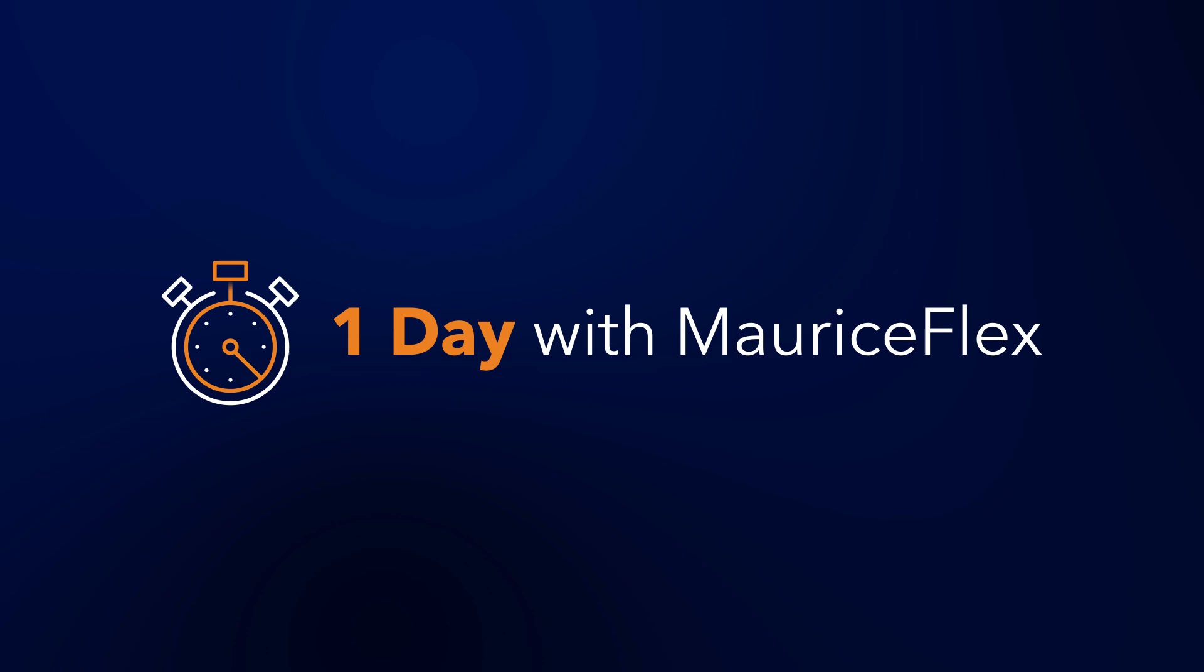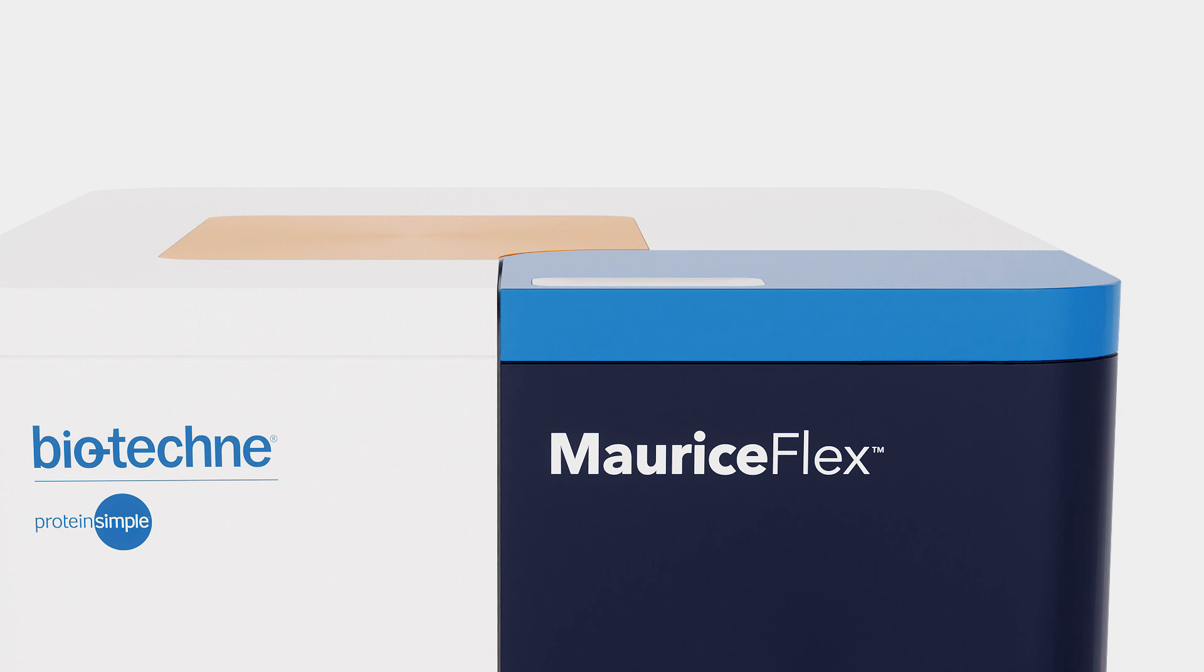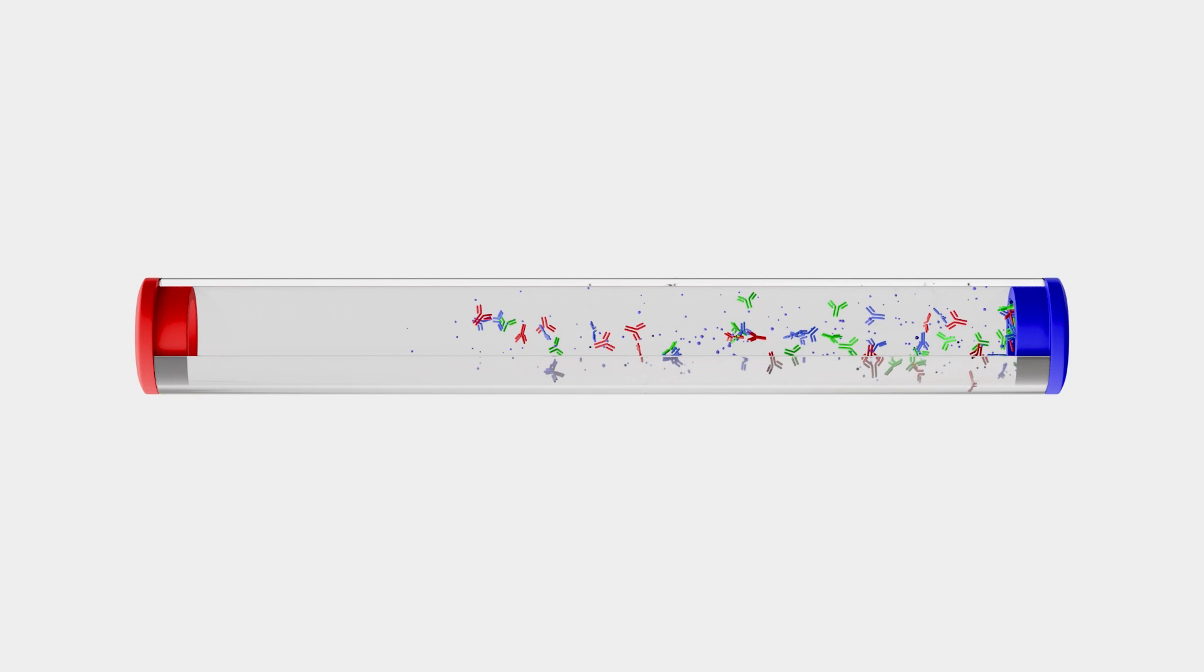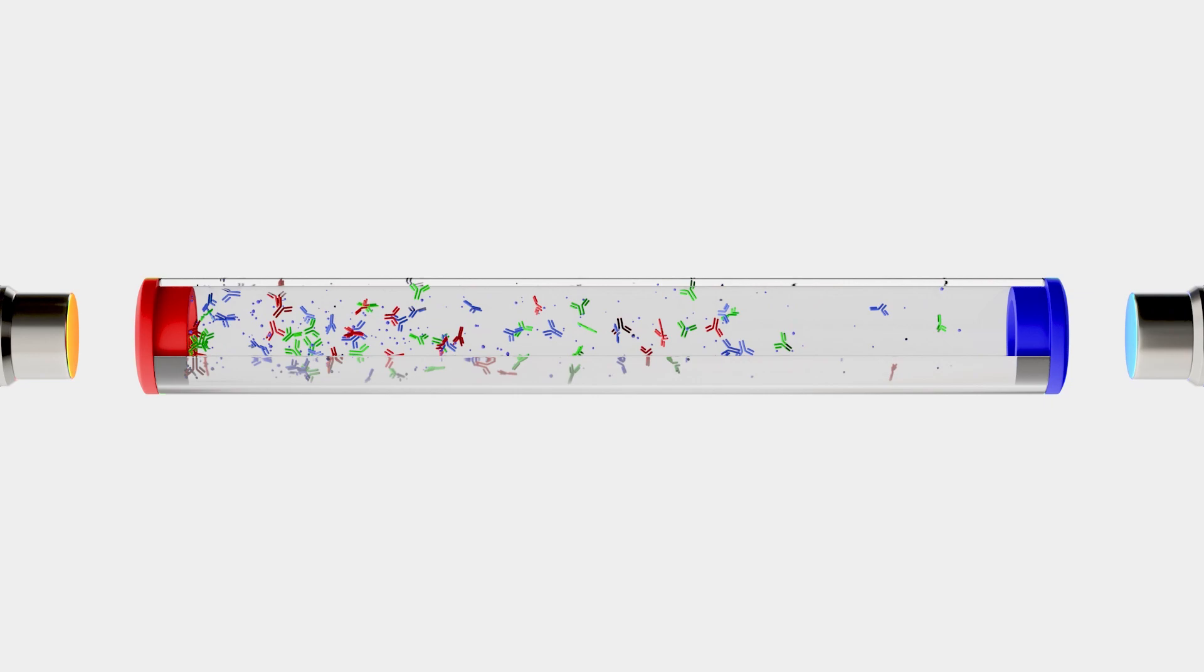MauriceFlex's unique isoelectric focusing-based fractionation is simple. First, MauriceFlex loads the protein sample into the capillary, into the flex fractionation cartridge. An electric field is then applied to create a pH gradient within the capillary.